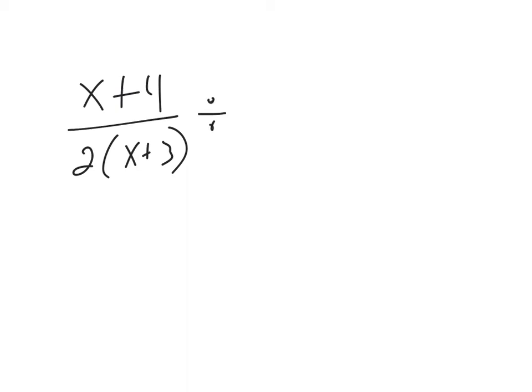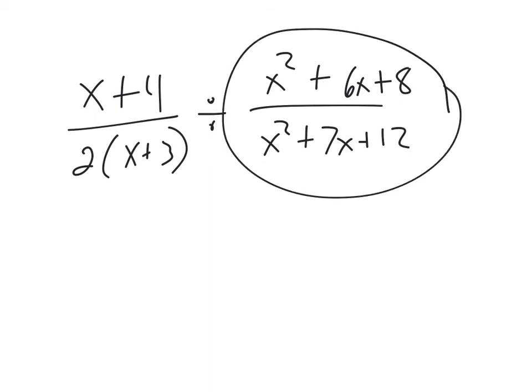And we're saying divide by (x squared plus 7x plus 12) over (x squared plus 6x plus 8). So it's the same thing, except this guy has to be flipped over, and I change the divide sign to a times.